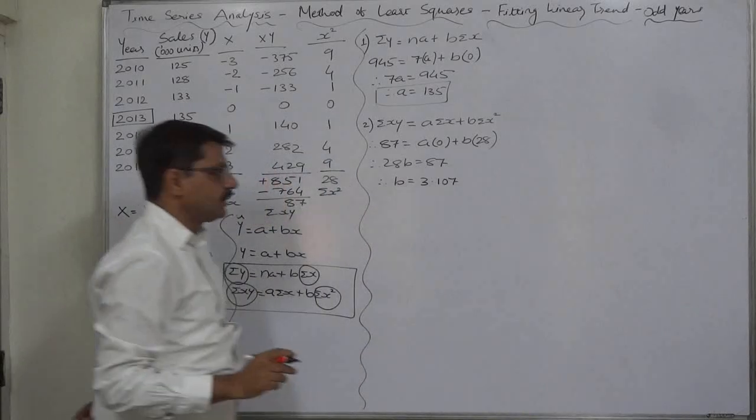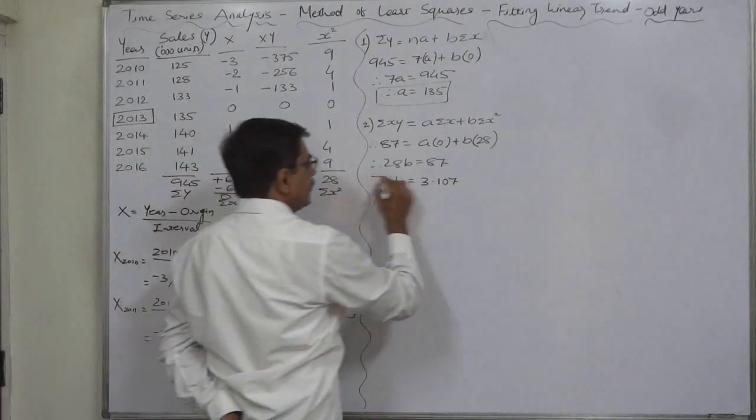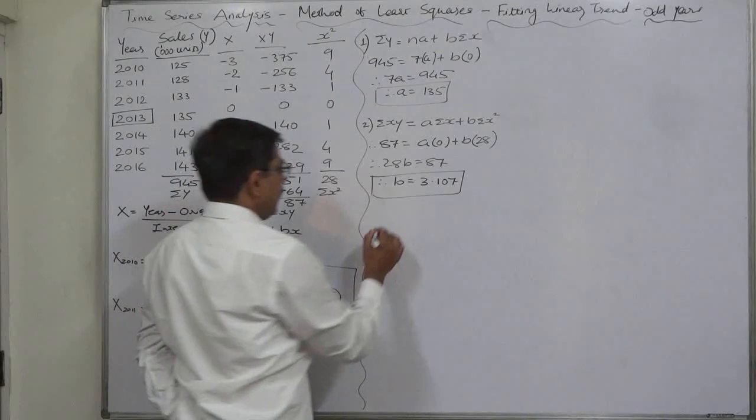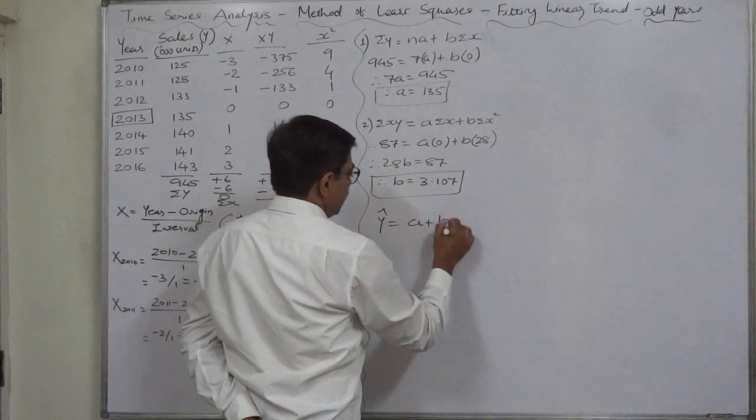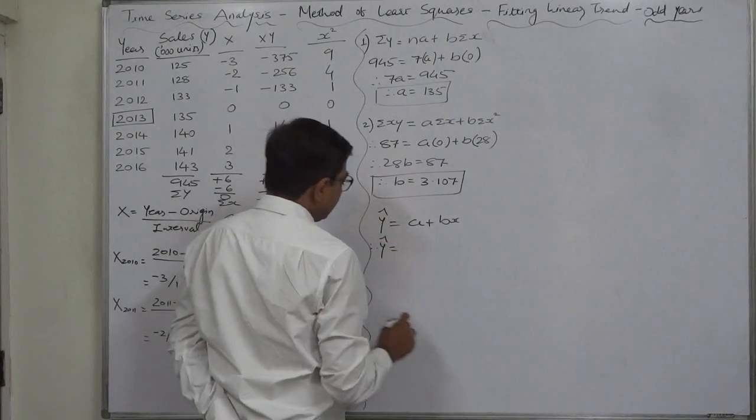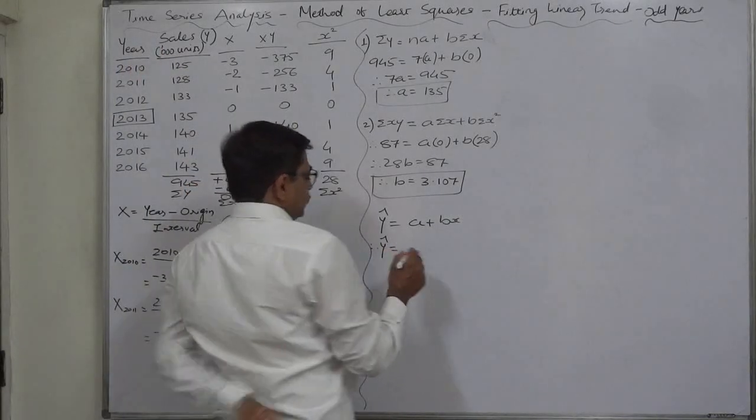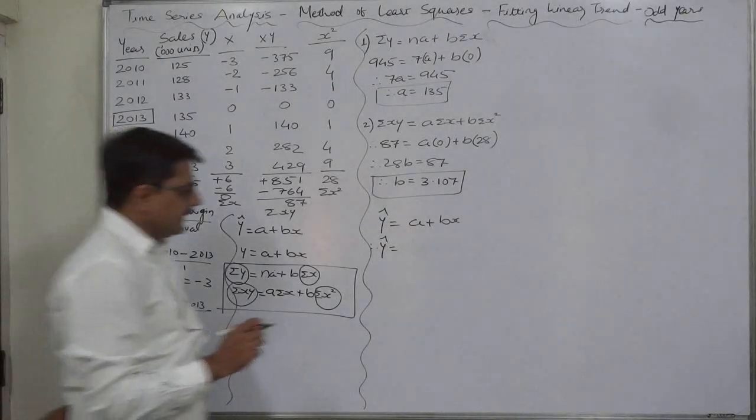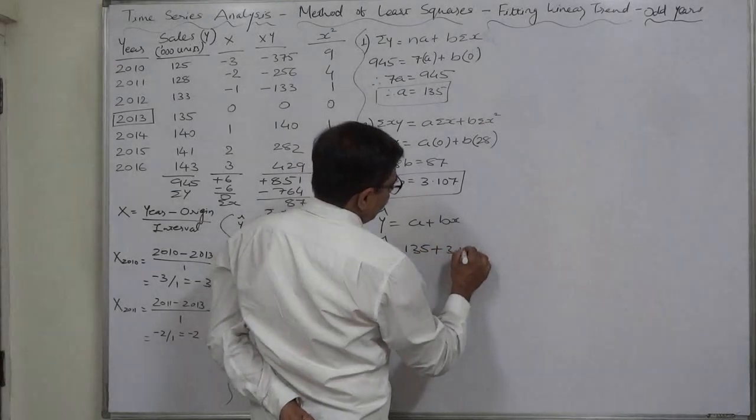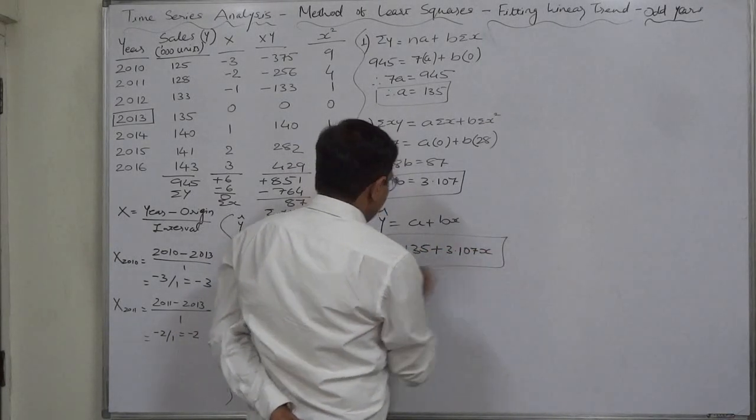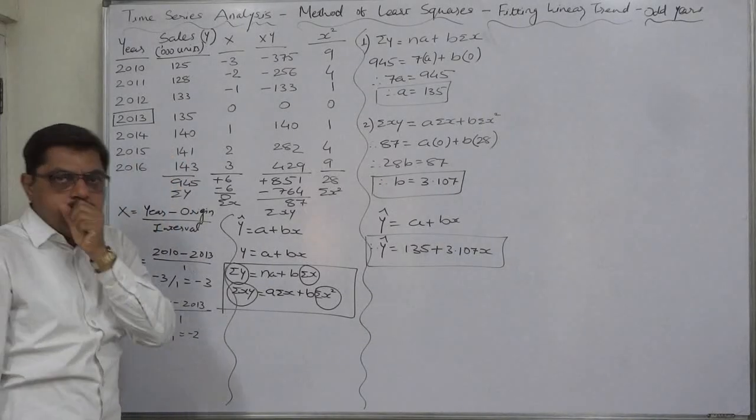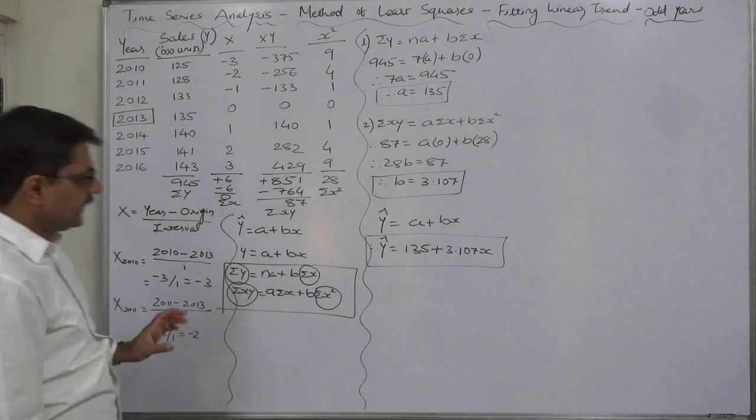Instead of 107 you can take double one also, rounding off in two decimal places, I leave it to you. Now we have a as well as b. Let's substitute them in the standard form of the linear equation. So now we can say that for this time series data the linear trend is Y or Y cap equals to 135 plus 3.107 X. The value of b is positive, that means the average rate of change in the phenomena is positive, that means generally the phenomena increases.